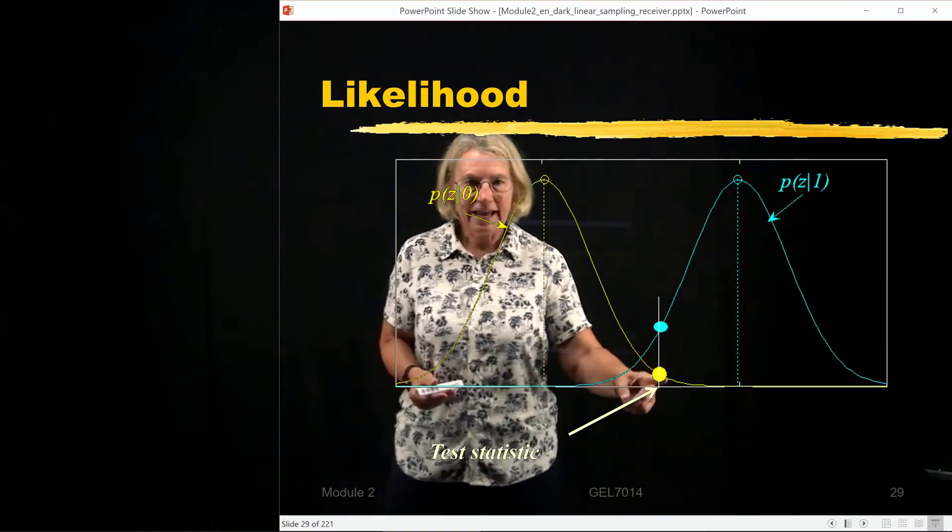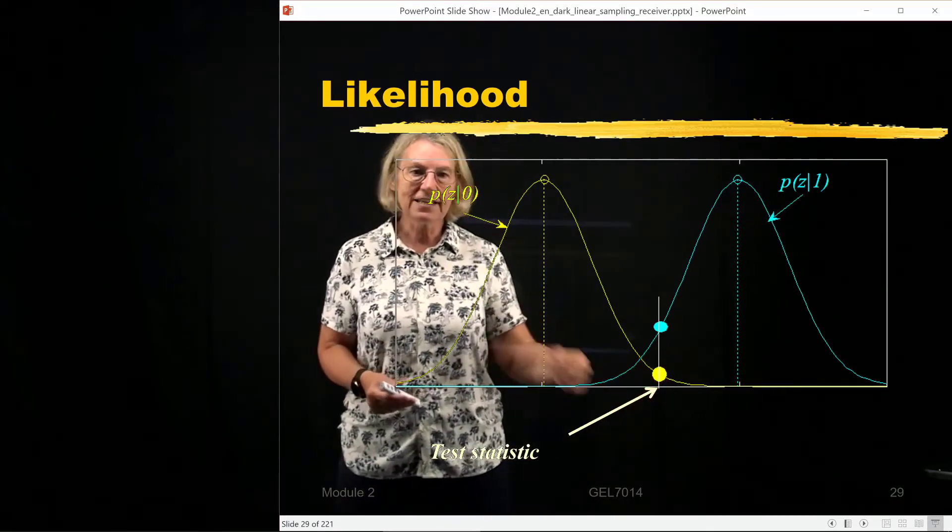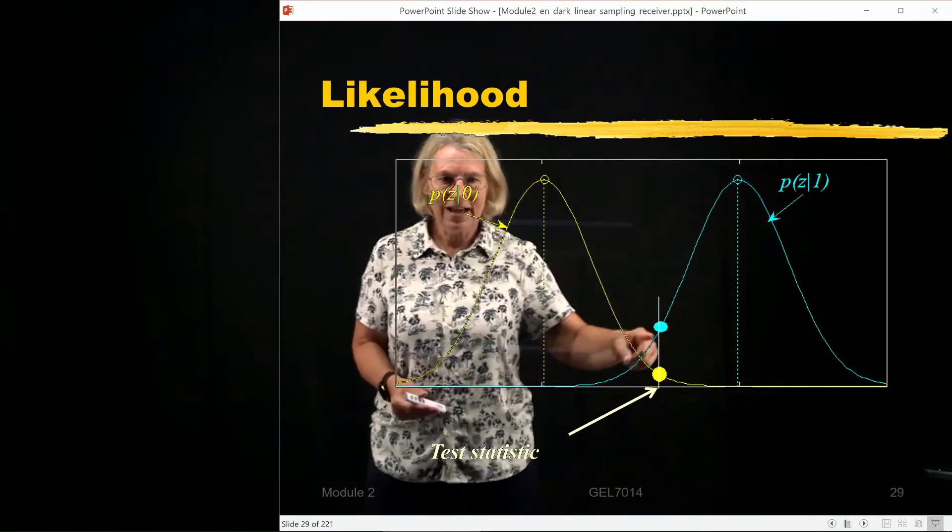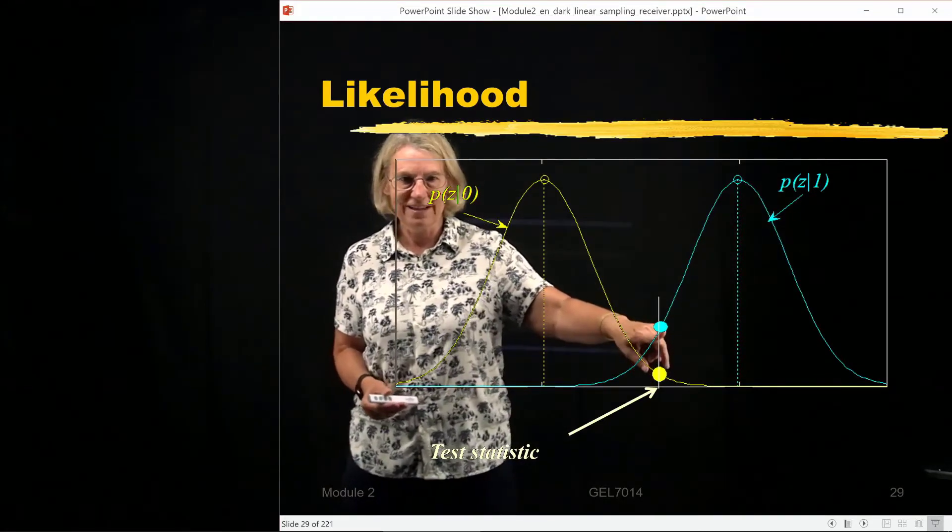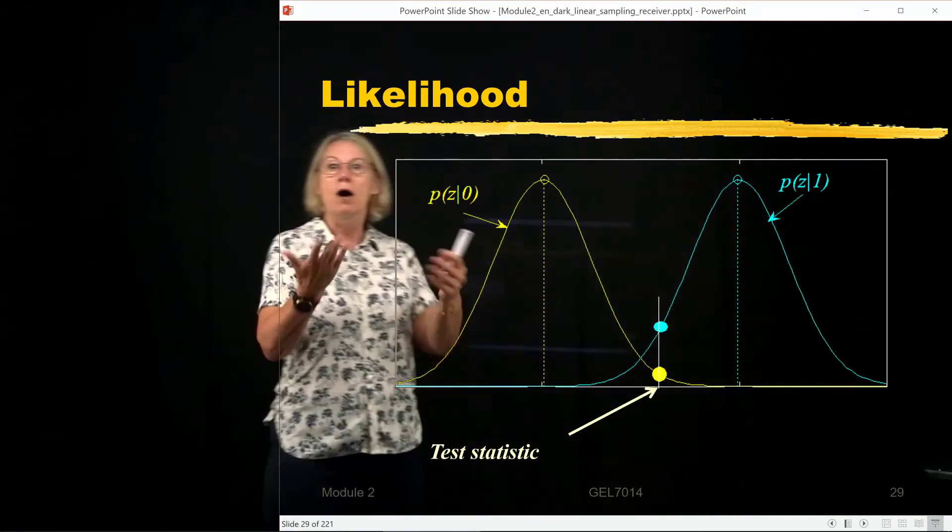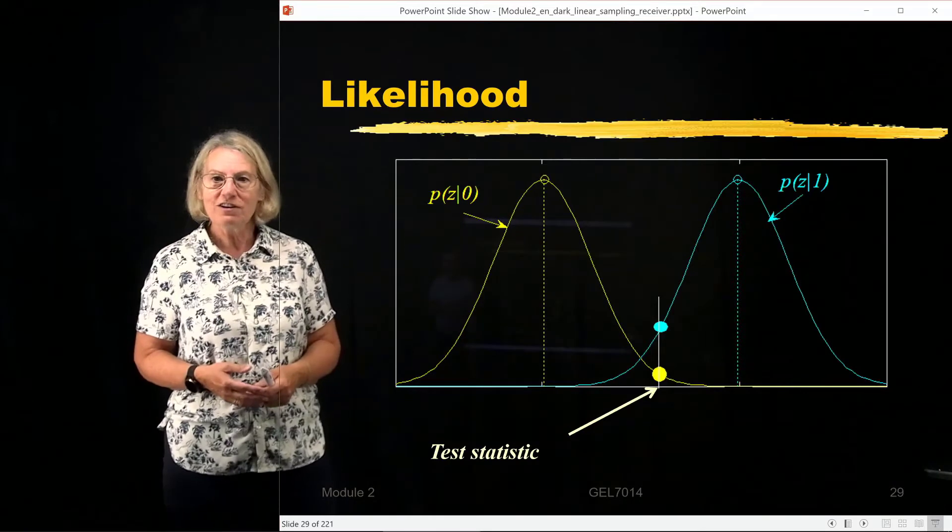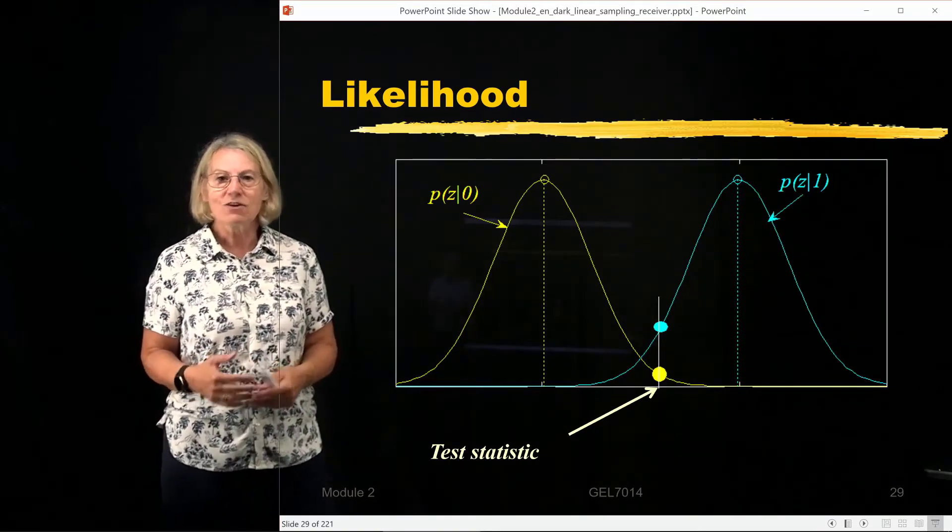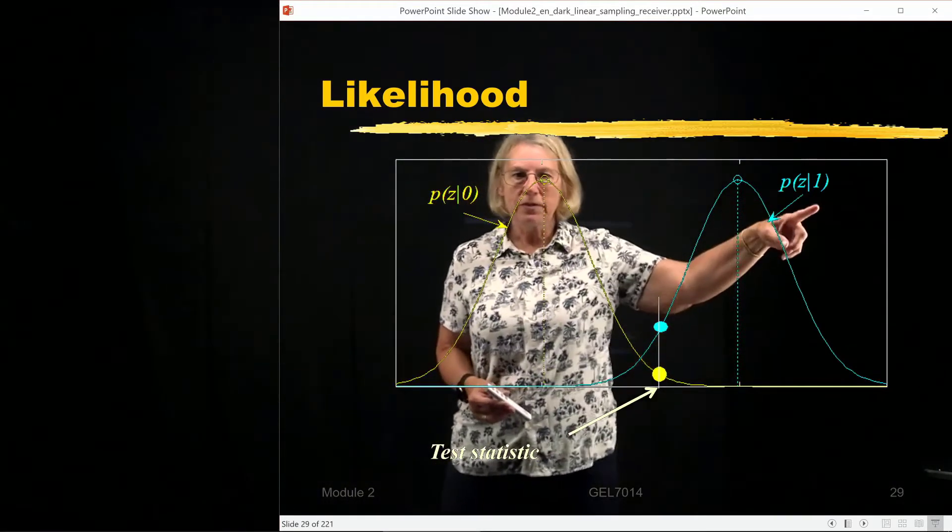And if I plugged in this test statistic into this equation, I would get this blue number. And graphically we could see that the blue number would be larger than the yellow number. So this would be a larger probability, conditional probability.